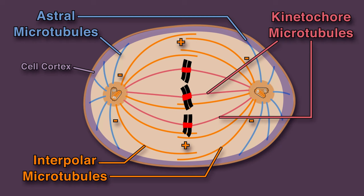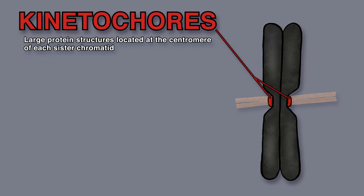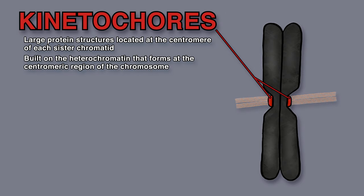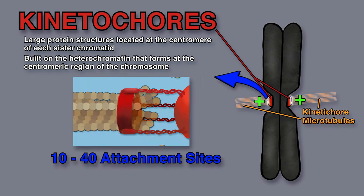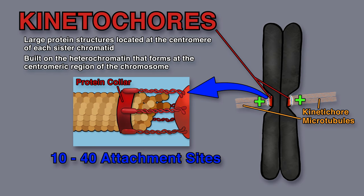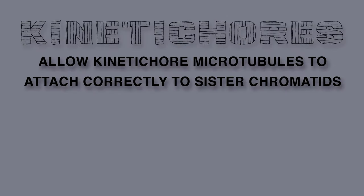Finally, there are the kinetochore microtubules, whose positive ends are attached to sister chromatid pairs at kinetochores. Kinetochores are large protein structures located at the centromere of each sister chromatid. The kinetochores are built on the heterochromatin that forms at the centromeric region of the chromosome. The kinetochores allow the plus ends of kinetochore microtubules to be embedded in special attachment sites. An animal cell kinetochore can have 10 to 40 of these attachment sites. The attachment sites contain a protein collar that secures the microtubule but still allows the addition or removal of tubulin subunits to its end. Kinetochores allow kinetochore microtubules to attach correctly to sister chromatids.